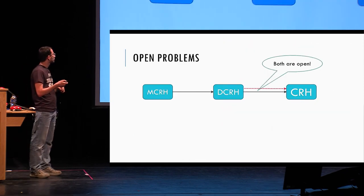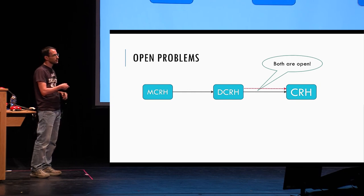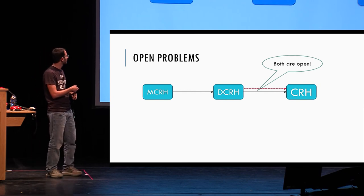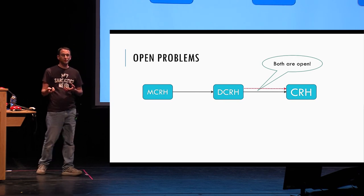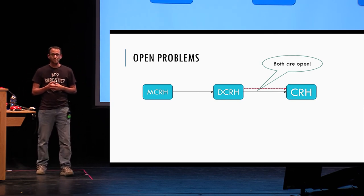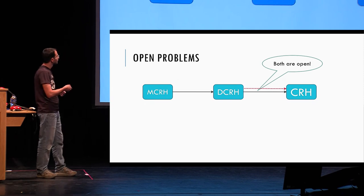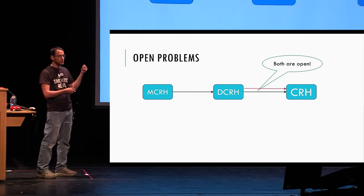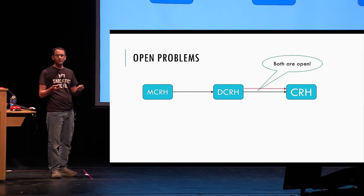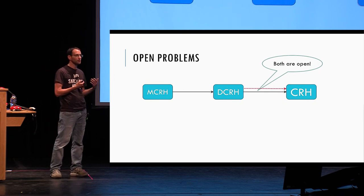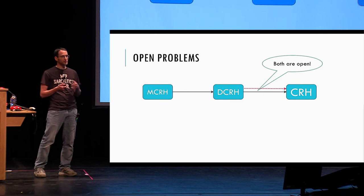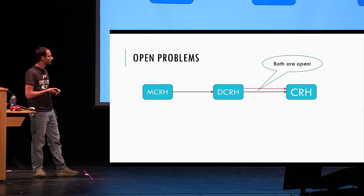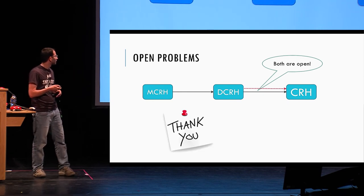Just to end with an open problem: we've shown that MCRH implies distributional CRH. What about going from distributional CRH to CRH, as in the one-way function case? We don't know of any construction, and we also could not show a black-box separation. Both positive and negative results here would be interesting. Thank you.